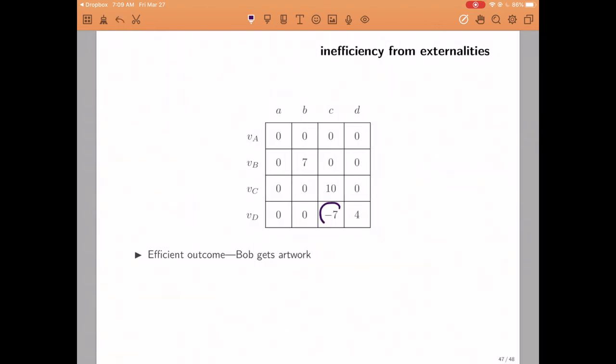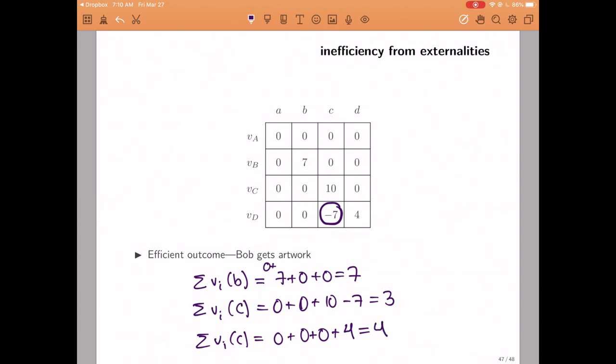So let's give some numbers to it. Let's say that if Charlie gets the painting, there's a minus seven utility for David. So now in order to find out what is the efficient outcome, we need to do a little bit more work because now we actually have to add up the utilities of different individuals. So if we give the painting to Bob, then the only person with a non-zero utility would be Bob himself, and the total sum of utilities would just be seven. If we give the object to Charlie, Anna's utility would be zero. Bob's utility would be zero. Charlie would get a utility of 10, but David would get a utility of minus seven. So the sum of values would be equal to three. Finally, if we give the object to David, the total sum of values would be equal to four. The greatest of these numbers is seven, and therefore the efficient outcome is to give the object to Bob.